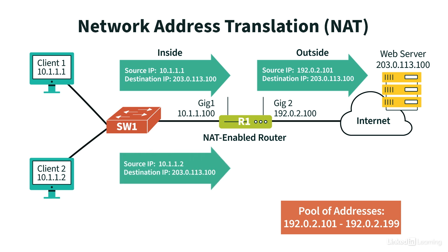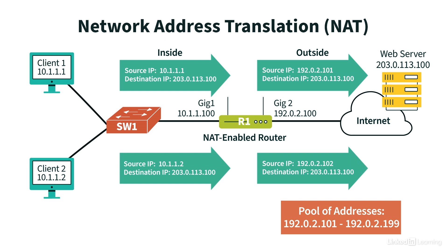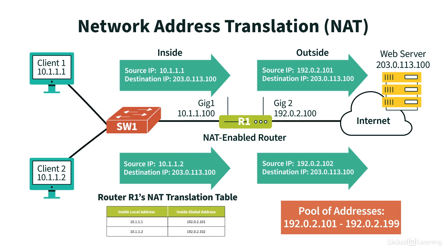Next, let's say Client2 also wants to communicate with the web server. Router R1 translates Client2's private IP address of 10.1.1.2 into a publicly routable IP address of 192.0.2.102, which is different than the IP address assigned from Router R1's pool of publicly routable IP addresses. Again, this information is stored in Router R1's NAT translation table. Notice this table has a column for inside local and inside global addresses.